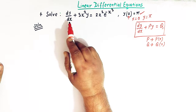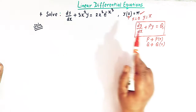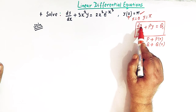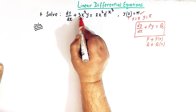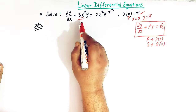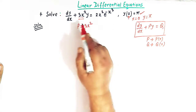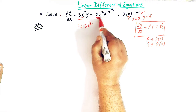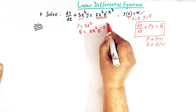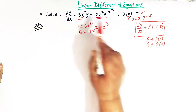Looking at our differential equation, we can conclude it is exactly of this standard form. Comparing, we have dy/dx, then the coefficient 3x² equals P. So P = 3x² and Q = 2x² e^(−x³).